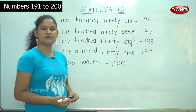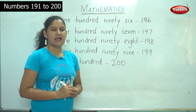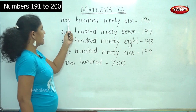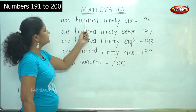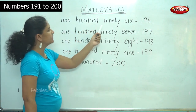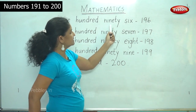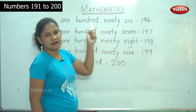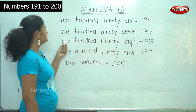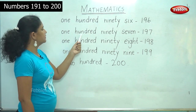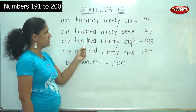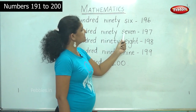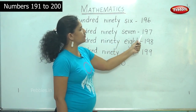So are you ready? We will do it again and you will be repeating it along with me. 196: O-N-E H-U-N-D-R-E-D N-I-N-E-T-Y S-I-X. 1-9-6. 197: O-N-E H-U-N-D-R-E-D N-I-N-E-T-Y S-E-V-E-N. 1-9-7.